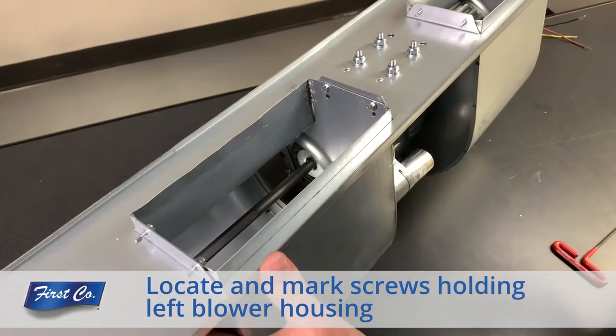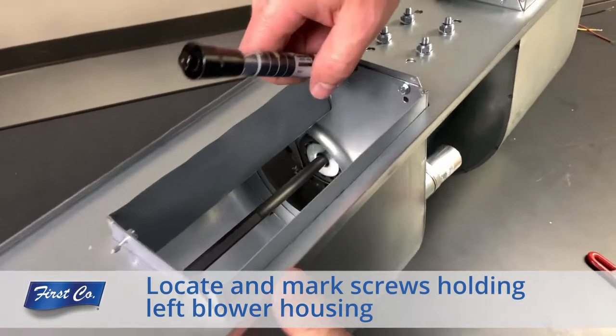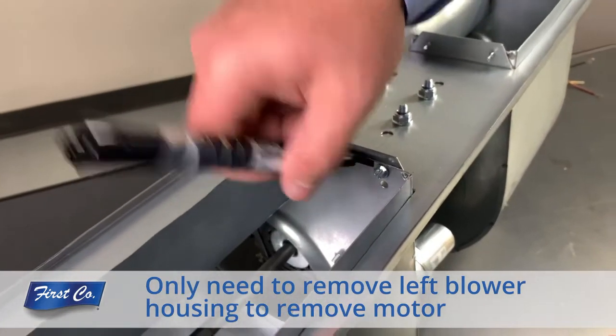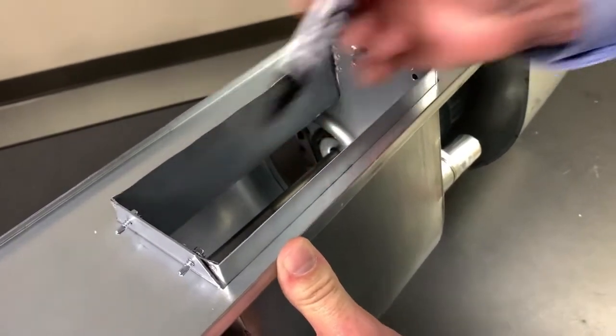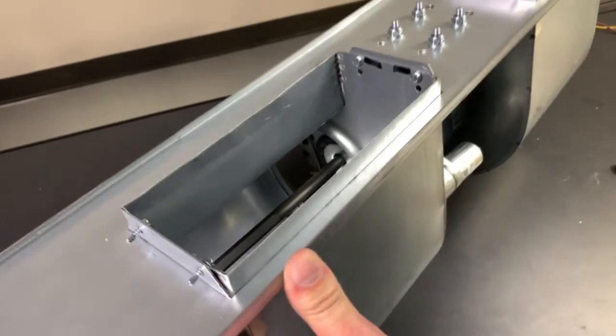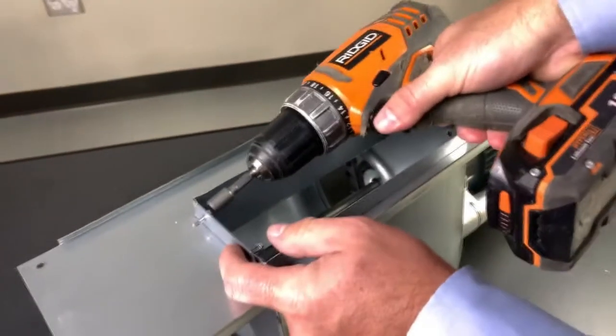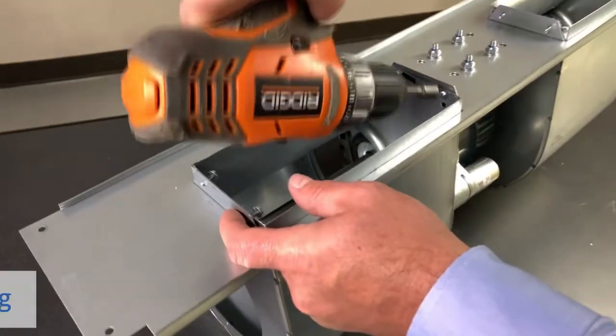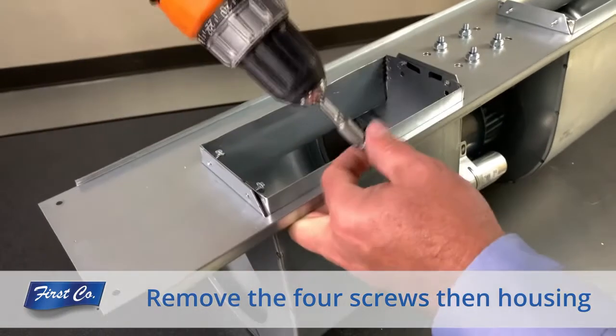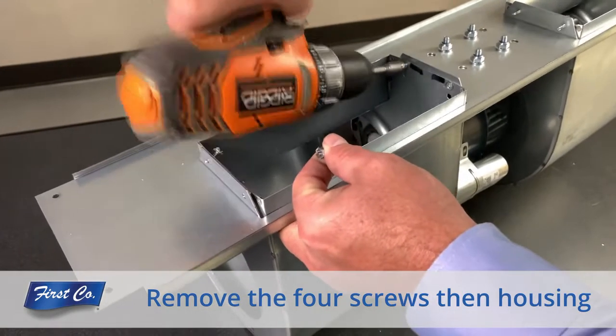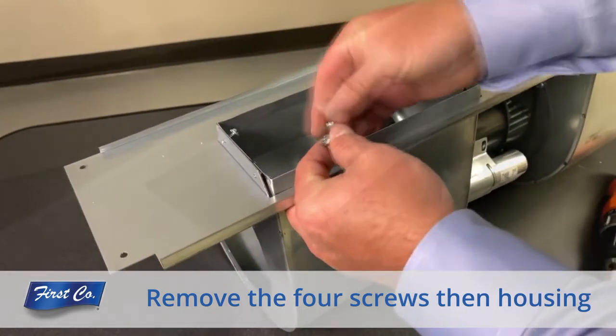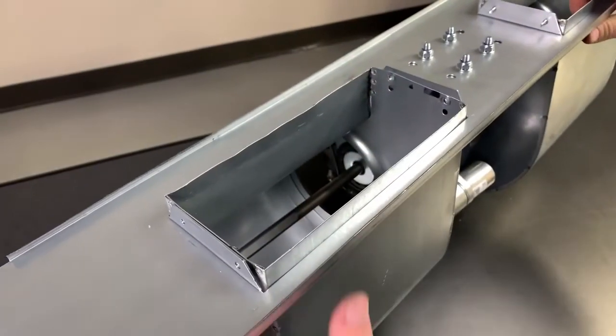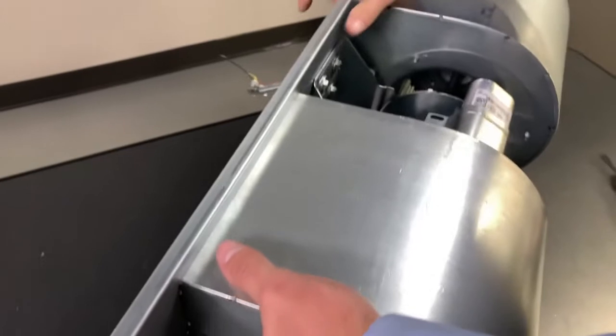Locate the four screws holding the left blower housing and mark these holes. You only need to remove the left blower housing to remove the motor. Remove the four screws and then remove the housing. This allows access for the motor to be removed.